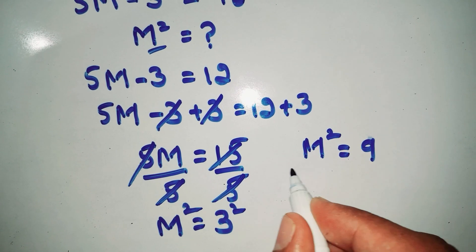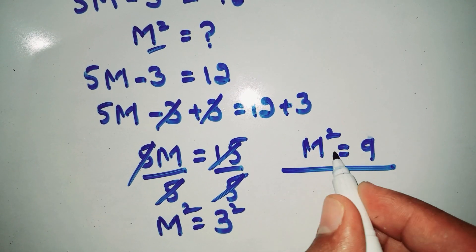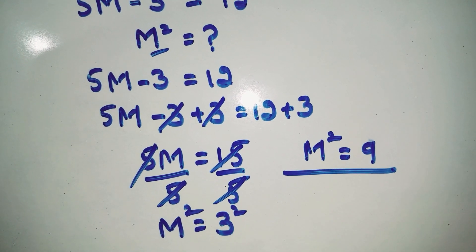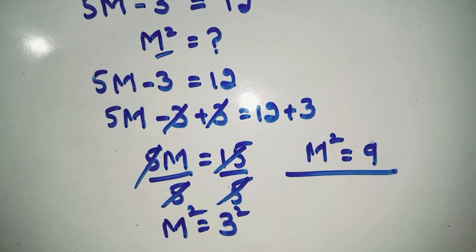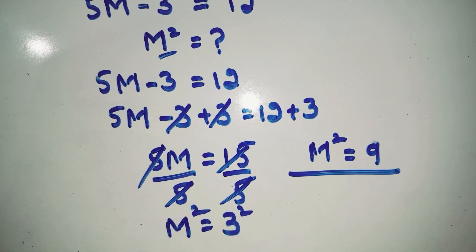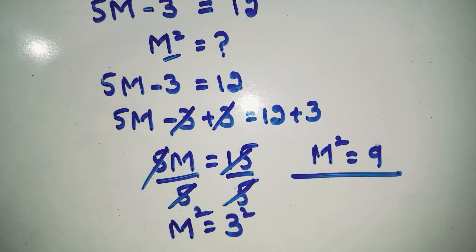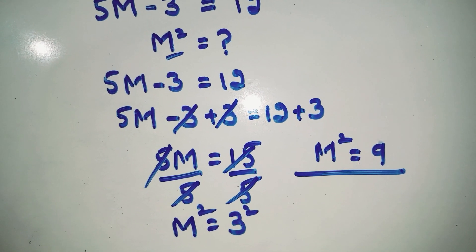3 square is equal to 9, so m square is equal to 9. This is our answer. Thanks for watching, please subscribe to the channel.